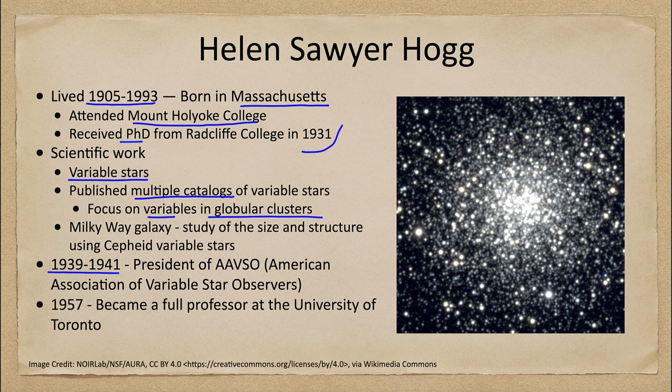How did this help us? One of the things we looked at was the size and structure of our Milky Way galaxy. One tool we can use are the Cepheid variable stars. Henrietta Leavitt discovered a period-luminosity relationship — that there is a relationship between the period of a Cepheid variable, how long it takes to vary in brightness, and its actual intrinsic brightness. By observing the period, you get its true brightness, how much energy it's putting out, and that allows you to determine its distance. This was key as a distance indicator.